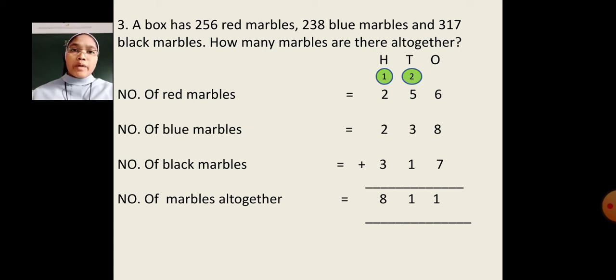Number of red marbles, 256. Number of blue marbles, 238. Number of black marbles, 317. Now, let's start adding from 1's place. 6 plus 8, 14. 14 plus 7, 21. 21's what we have to write here? 1. 2 will carry 10's place. 2 plus 5, 7. 7 plus 3, 10. 10 plus 1, 11. 11's we have to write 1. 1 will carry 100's place. 1 plus 2, 3. 3 plus 2, 5. 5 plus 3, 8. So, the total number of marbles all together, 811.